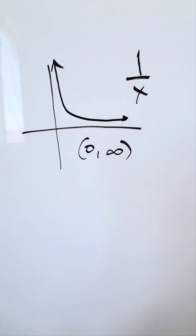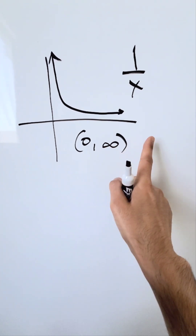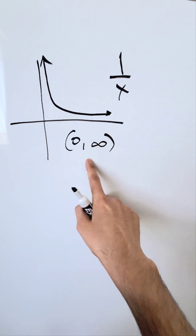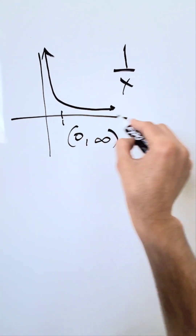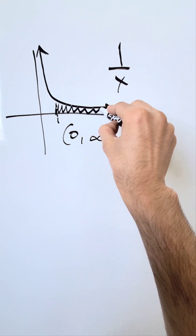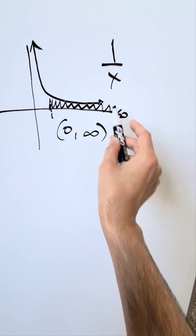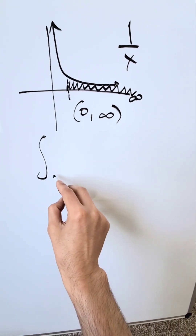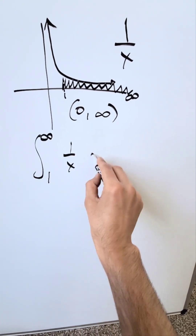Let's look at an interesting integral outcome. Looking at the function 1/x, focusing only on the positive part of its domain, I mark 1 and go all the way up to infinity. I want to determine all the area below the curve from 1 up to infinity. You can determine it by evaluating the integral from 1 up to infinity of 1/x dx.